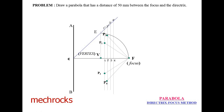Now take 3 to 3 dash as the radius, with F as center. Cut the line above and name it as P5, and below as P6. Then take 4 to 4 dash as the radius, with F as center. Cut the line above and below, naming them P7 and P8 respectively.